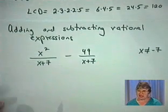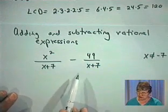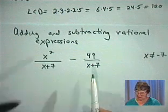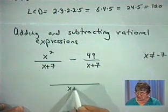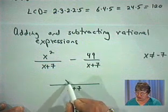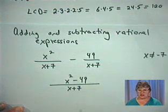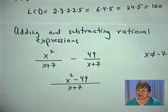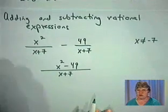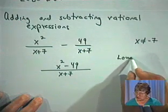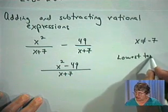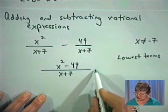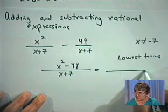So here we have a subtraction of two rational expressions. But in this case, it's a quick job here because we've got the same denominator. So from what we know, since we have a common denominator, all that we need to do is to subtract the numerators in this case: x squared minus 49 over that common denominator, x plus 7. But now we've got an expression, and we need to write it in lowest terms. And so in order to find the lowest term for this expression here, we're going to factor the numerator and factor the denominator.